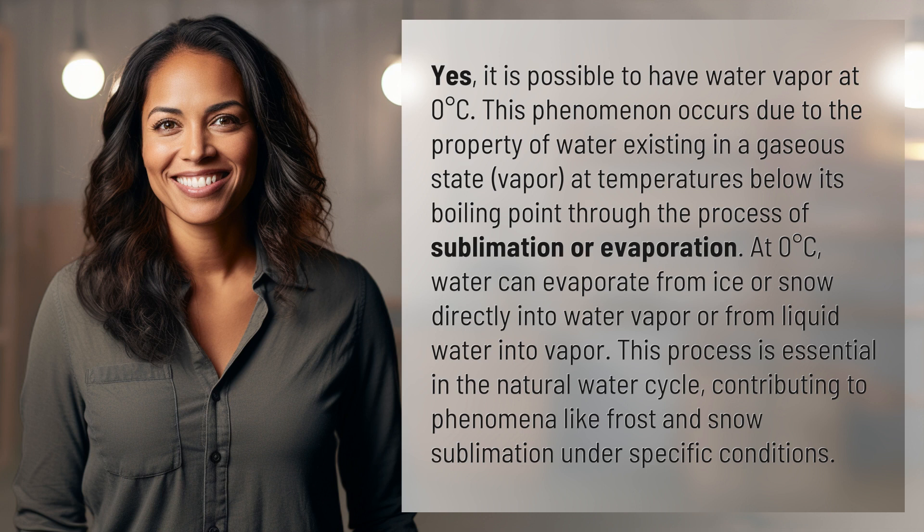at temperatures below its boiling point through the process of sublimation or evaporation. At zero degrees Celsius, water can evaporate from ice or snow directly into water vapor, or from liquid water into vapor. This process is essential in the natural water cycle, contributing to phenomena like frost and snow sublimation under specific conditions.